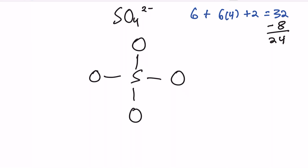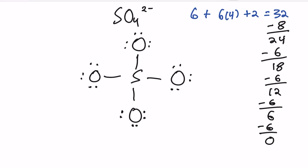Step four is to complete each atom's octet. Sulfur already gets eight electrons from its four bonds, so it's already happy. For each oxygen, we draw six lone electrons around it (since it already gets two from the bond), and subtract six from our total each time. Once you count it up, each one of our atoms now has a complete octet.